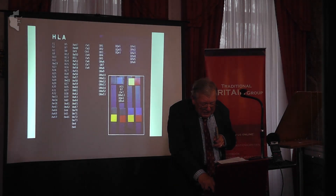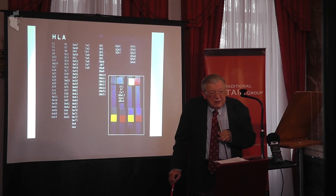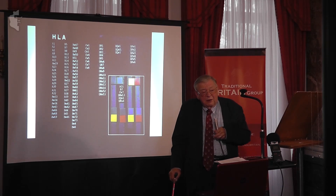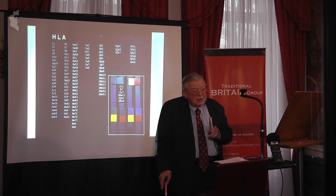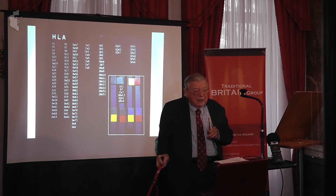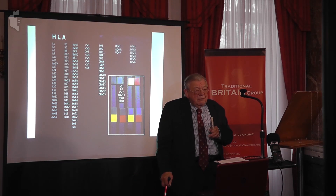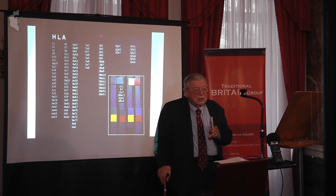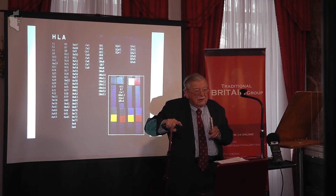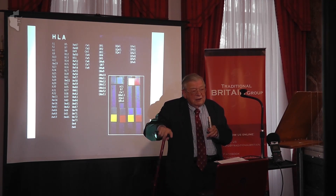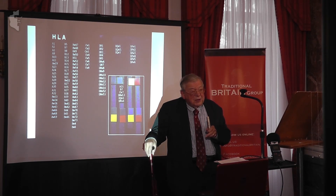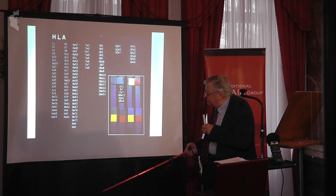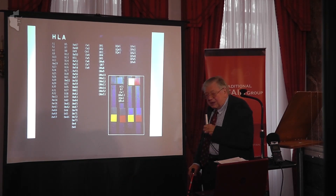I want to tell you about another set of differences I've been very involved in. You may know that if you have a bone marrow transplant or a kidney transplant, you have to be matched for much more than just the ABO types, because there are differences between almost all of us such that when you give a foreign graft, it's recognized as foreign — just like an infection — and it's rejected by your immune system. This system of types is called HLA, and it's much more complicated.